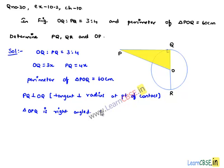By Pythagoras theorem, we can say OP² equals PQ² plus OQ². This implies OP² equals (4x)² plus (3x)², which equals 16x² plus 9x² equals 25x².